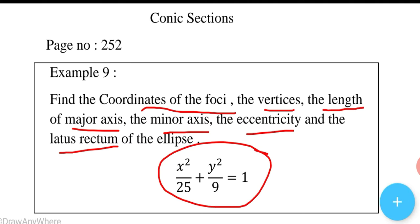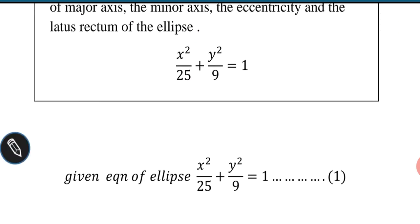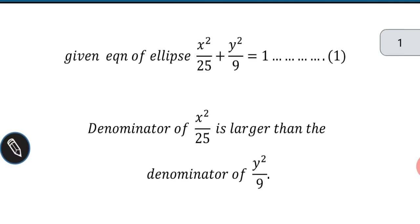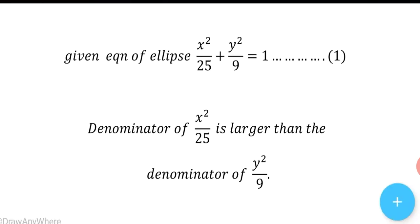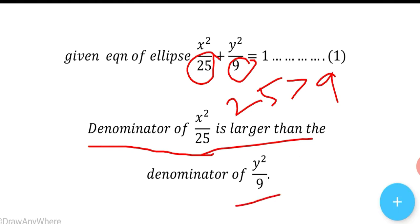The given equation of ellipse is x squared divided by 25 plus y squared divided by 9 equal to 1. By observing the given equation, we can understand the denominator of x squared is 25 and the denominator of y squared is 9. So 25 is greater than 9.